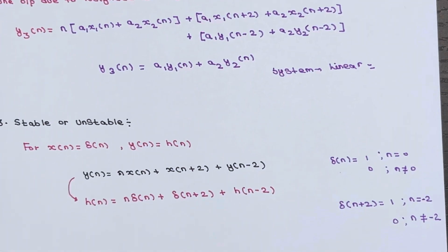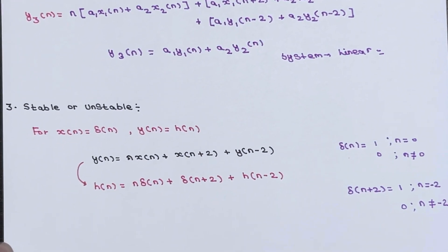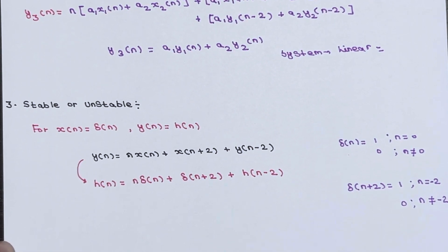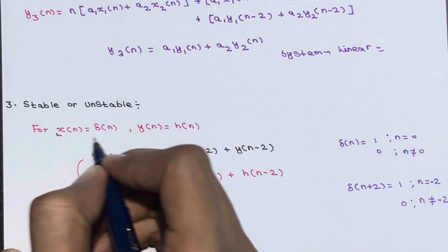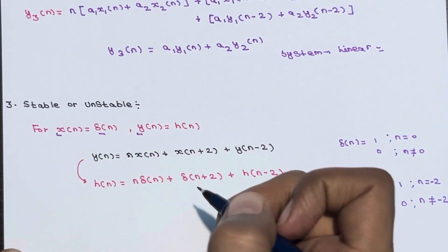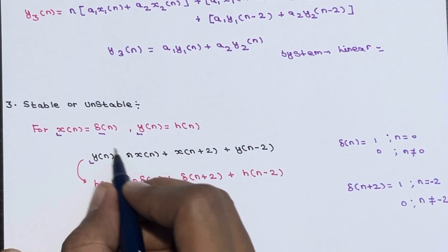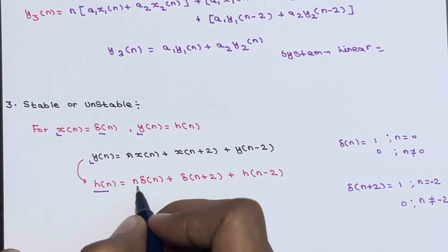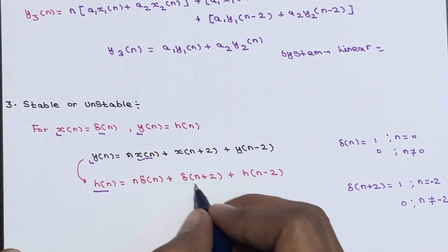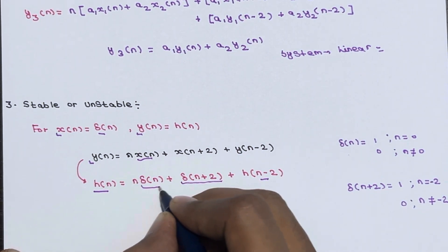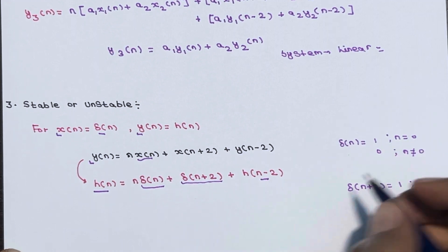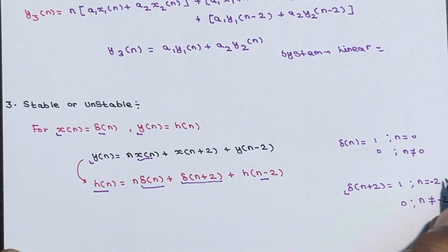Now let us check for stability — whether the system is stable or unstable. Suppose the input is δ(n). For x(n) = δ(n), the output y(n) = h(n). Replacing in the equation: h(n) = n·δ(n) + δ(n+2) + h(n−2). Note that δ(n) = 1 when n = 0, and δ(n+2) = 1 when n = −2, and zero elsewhere.